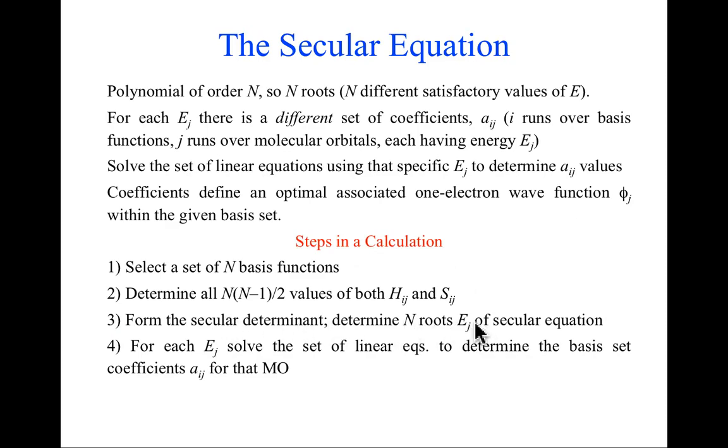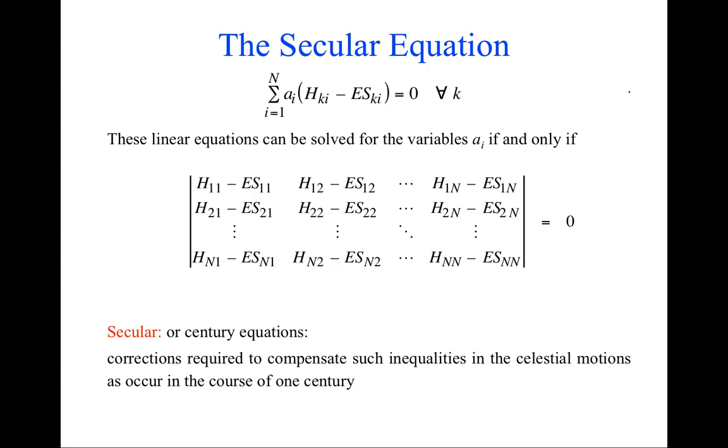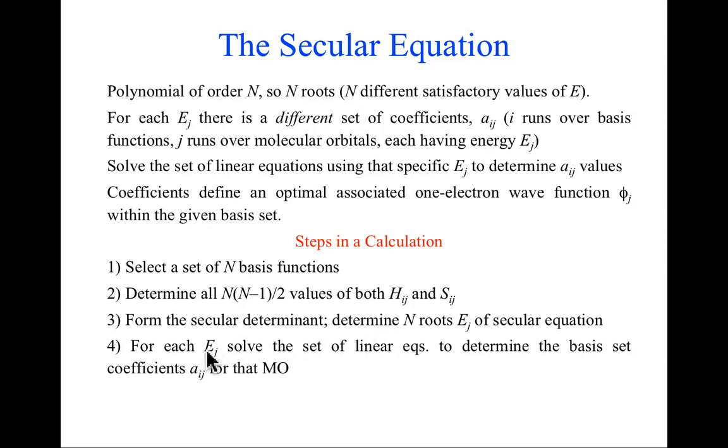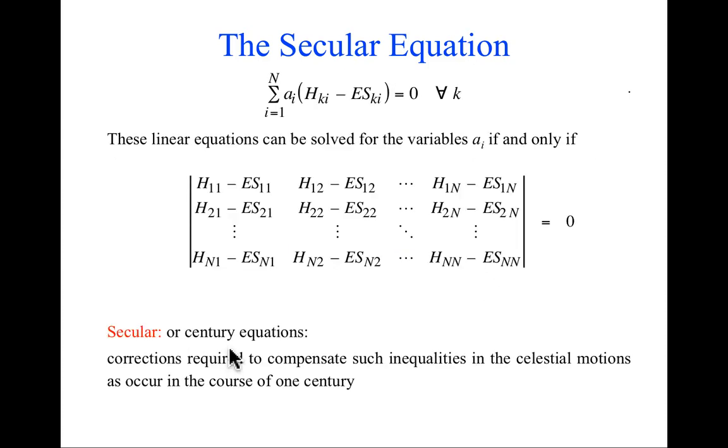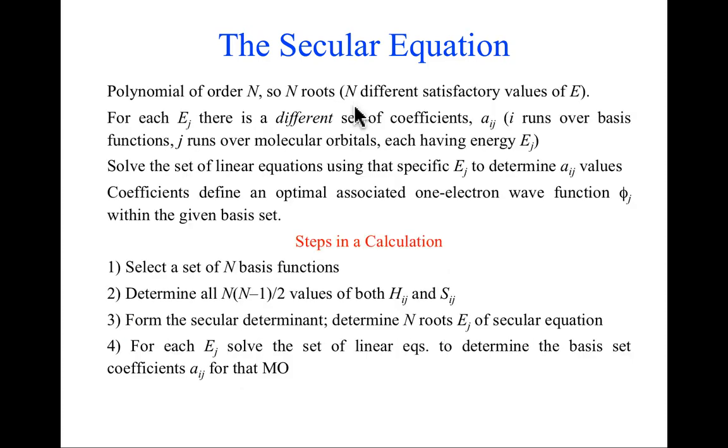Determine the N roots of E sub j that satisfy the secular equation. Expand out this determinant or use the powers of linear algebra coded into some computer program to determine the capital N values of E that make this equation true. Then for each one of those E's, go back, plug in that value, given you already know all the H's and S's, find the A's that satisfy the system of N linear equations. There will be a different set for each E. When you're done, you'll have the molecular orbital coefficients.